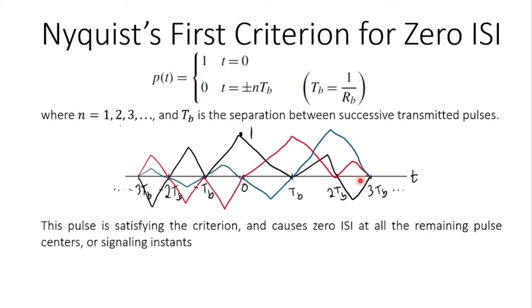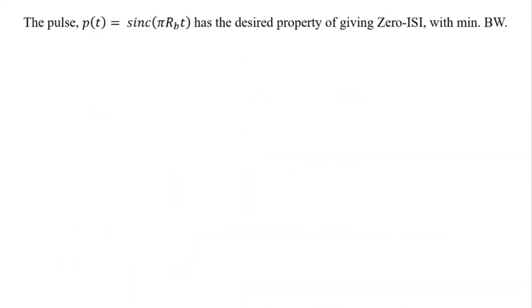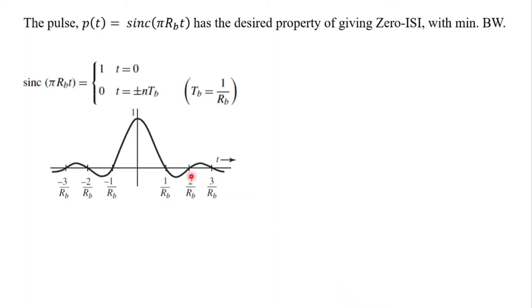But is this bandwidth efficient scheme and we need 0 ISI with minimum bandwidth. So basically the minimum bandwidth with 0 ISI is simply a sinc function in time domain. It has a value of 1 at t equal to 0 and 0 crossings at Tb which is time period of a bit or we can say Tb is equal to 1 over Rb where Rb is simply the rate.